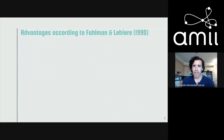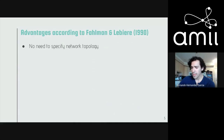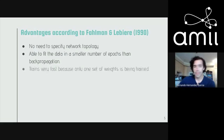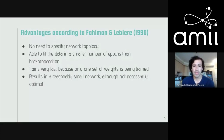What are the advantages of this architecture? As Fahlman and Lebiere, the original authors, pointed out: the architecture doesn't need to specify network topology, so there's less hyperparameter tuning to be done. They also claimed it was able to fit data in a smaller number of epochs than backpropagation, that it trains very fast because only one set of weights is trained at any given epoch, and that it results in reasonably small networks.